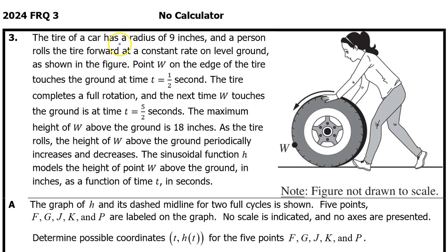The tire of a car has a radius of 9 inches, and a person rolls the tire forward at a constant rate on level ground, as shown in the figure. Point W on the edge of the tire touches the ground at time t equals 1⁄2 second. The tire completes a full rotation, and the next time W touches the ground is at time t equals 5 over 2 seconds.